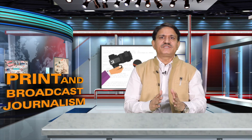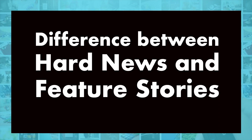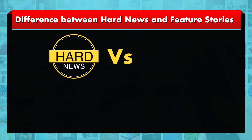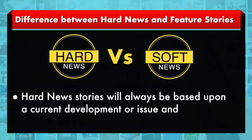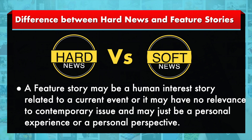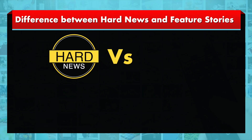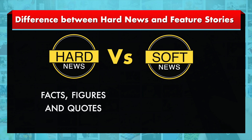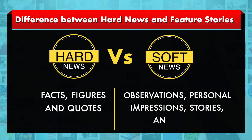Let us discuss the difference between hard news and feature stories. Hard news stories will always be based upon a current development or issue and will be timely in nature. Whereas a feature story may be a human interest story related to a current event, or it may have no relevance to a contemporary issue and may just be a personal experience or personal perspective. A news story has facts, figures and quotes from credible sources, whereas feature stories may contain observations, personal impressions, stories, and anecdotes with fewer facts.